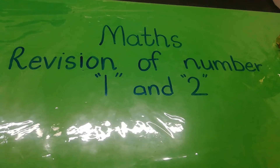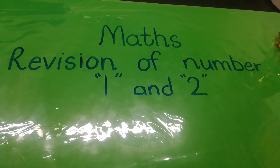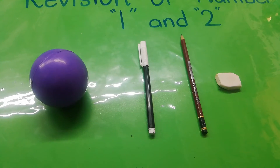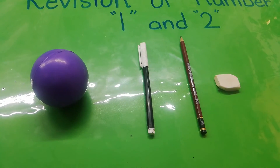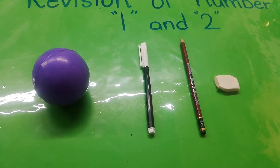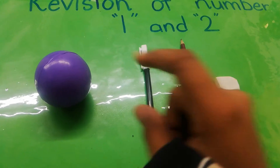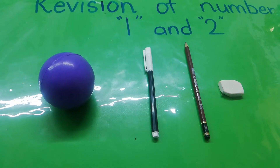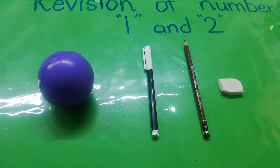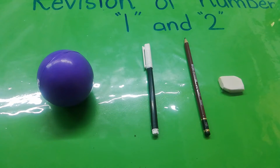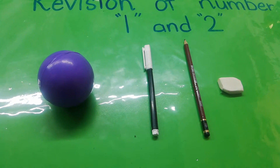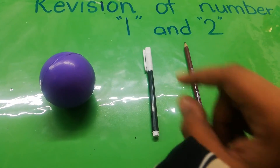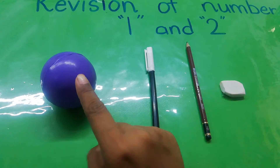Here I have some objects for number 1. Look, here I have some objects. Ball — how many balls are there? There is only one ball. One ball.